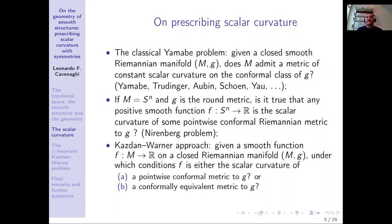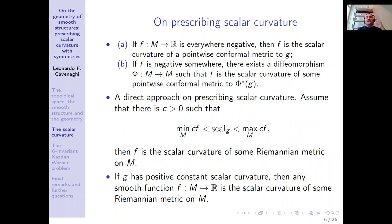There is the Kazdan-Warner approach — not only an approach but also a problem — that is: given a smooth function on a closed Riemannian manifold, under which condition can this function be prescribed as the scalar curvature of either a pointwise conformal metric to G, or a conformally equivalent metric to G? By conformally equivalent I mean pointwise conformal to G up to pullback by a diffeomorphism. Some answers given by Kazdan-Warner: if the function is everywhere negative, then it is the scalar curvature of a pointwise conformal metric to G. If it is negative somewhere, then there exists a diffeomorphism such that F is the scalar curvature of some pointwise conformal metric to the pullback.